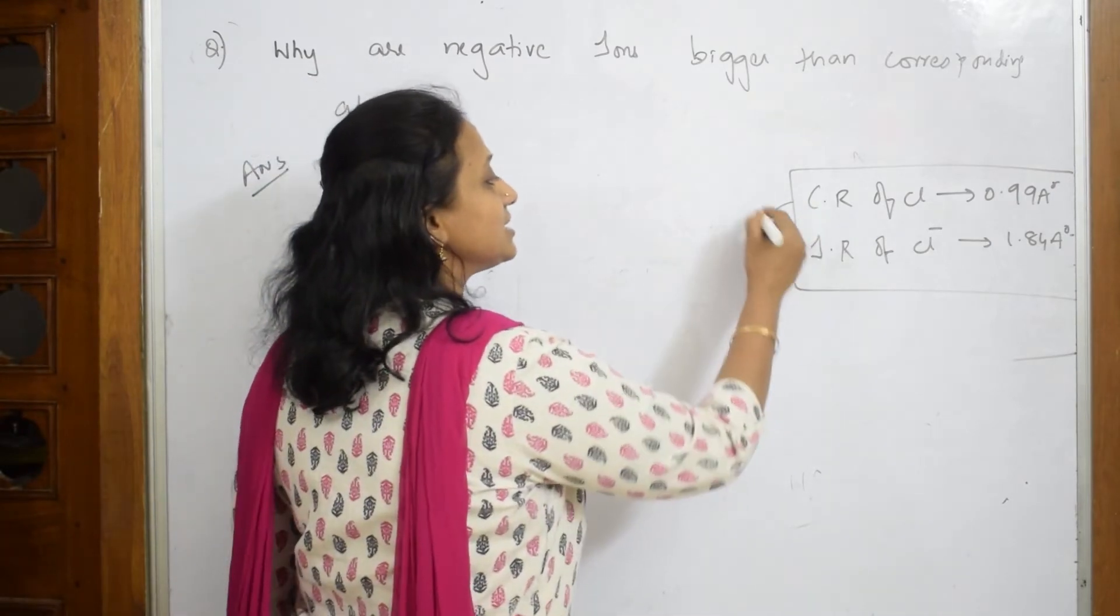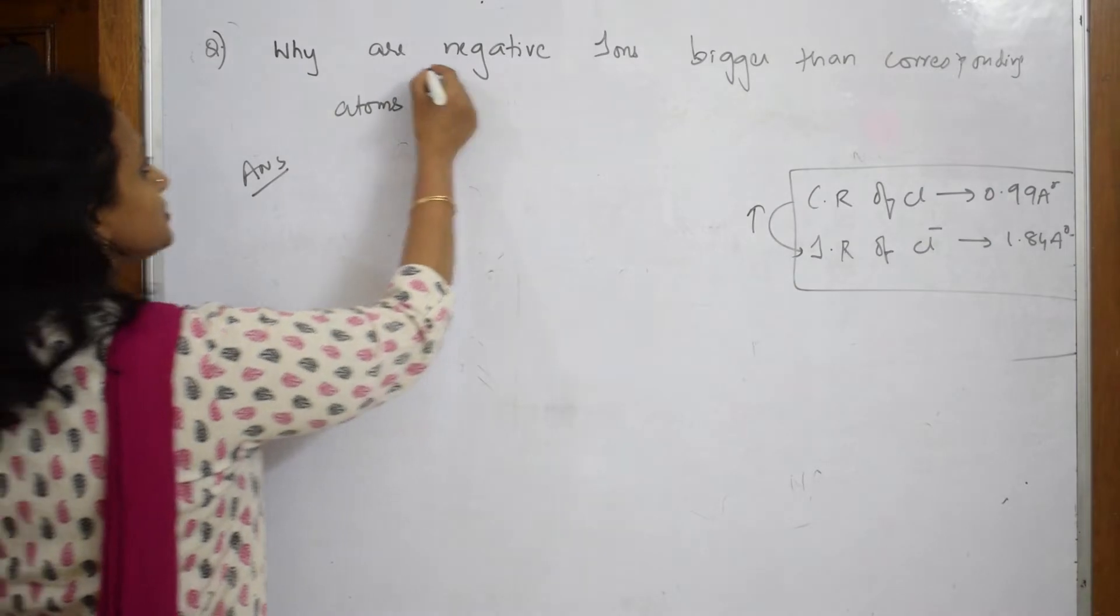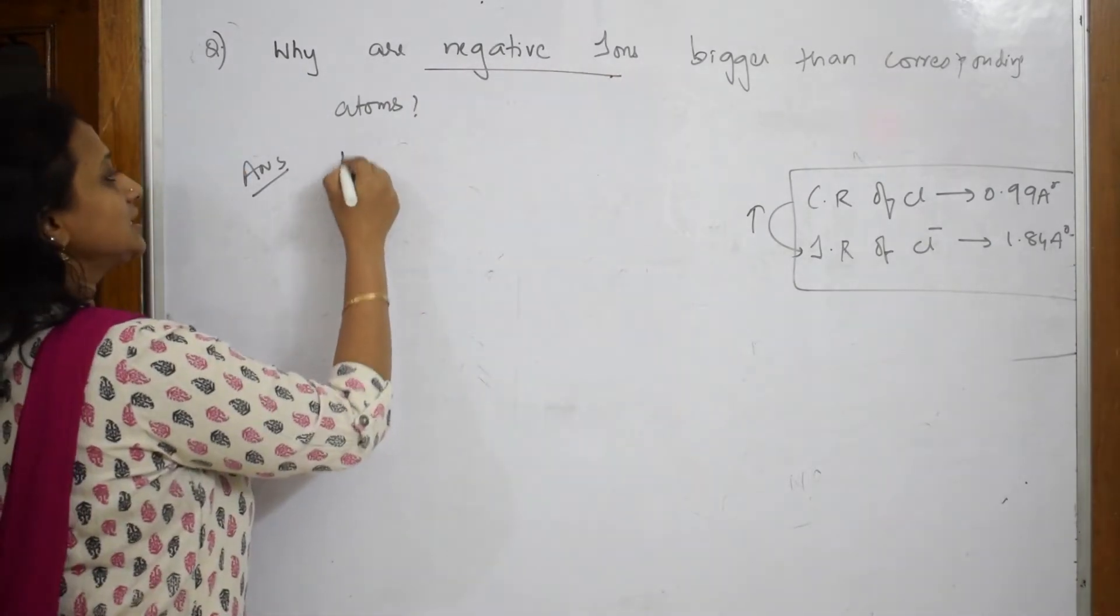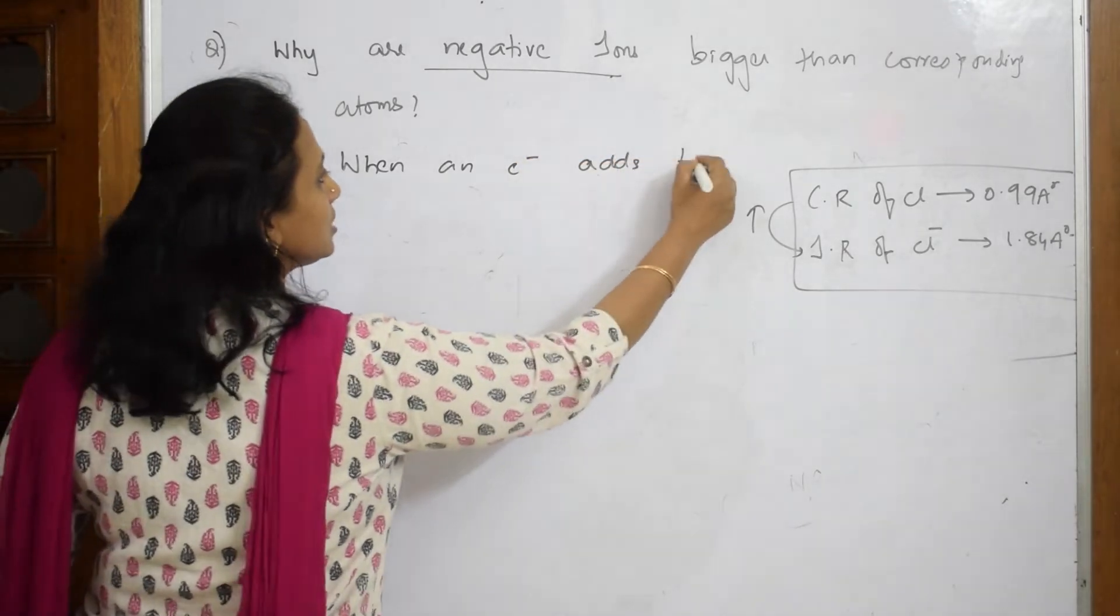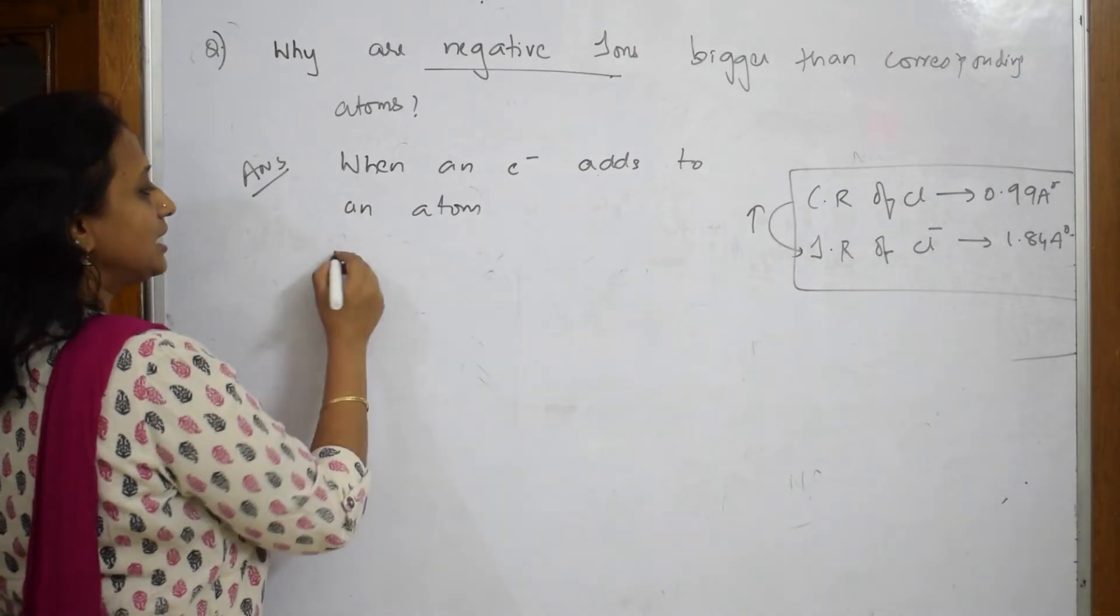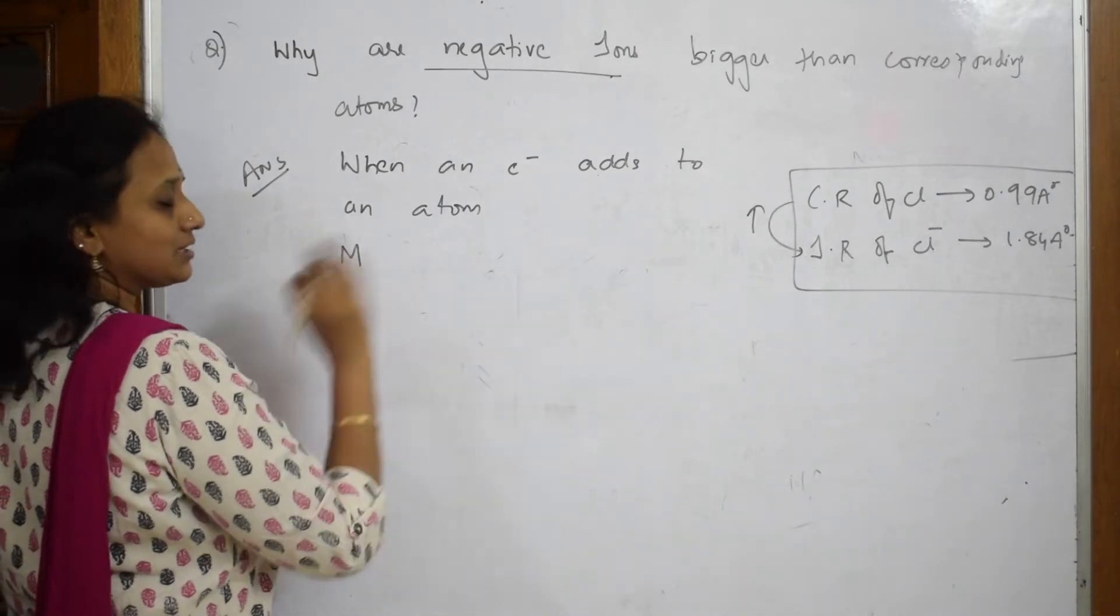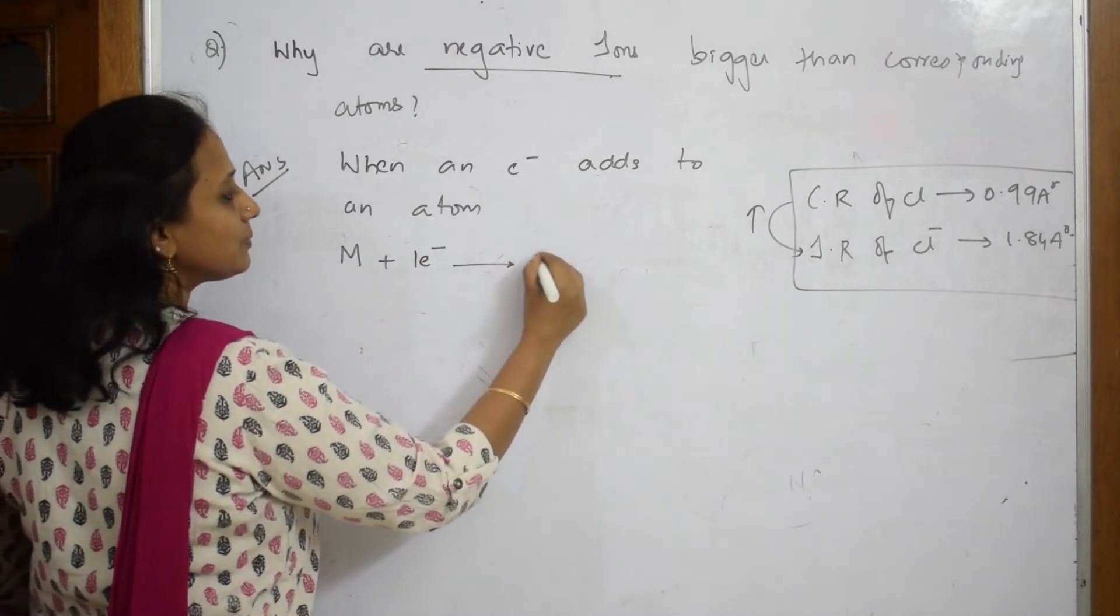Let us write the answer. What happens whenever I speak about a negative ion? When an electron adds to an atom—what is electron adding to atom? That means if I take a particular atom, I am adding one electron to this. So immediately, it becomes M minus. You are adding, so this is an anion.